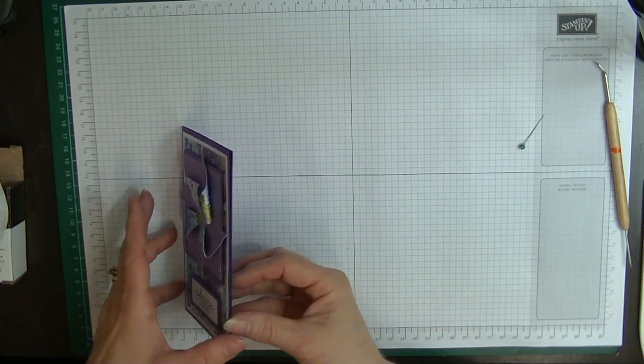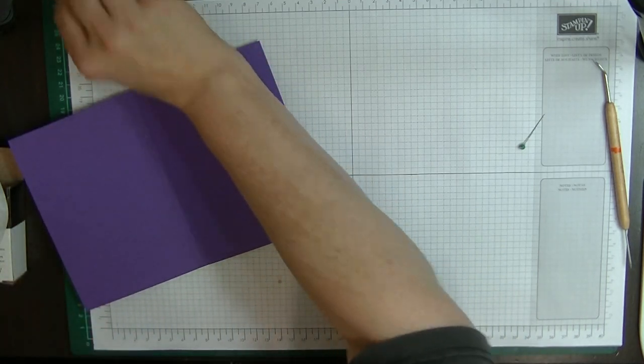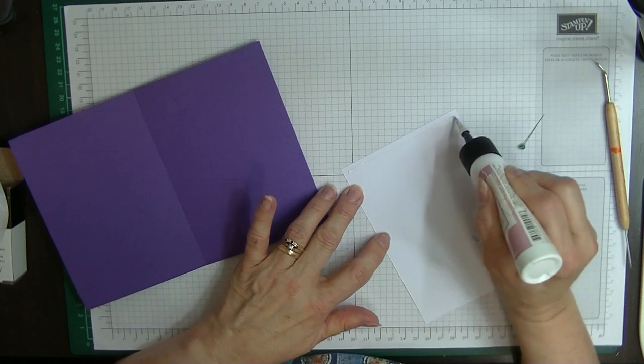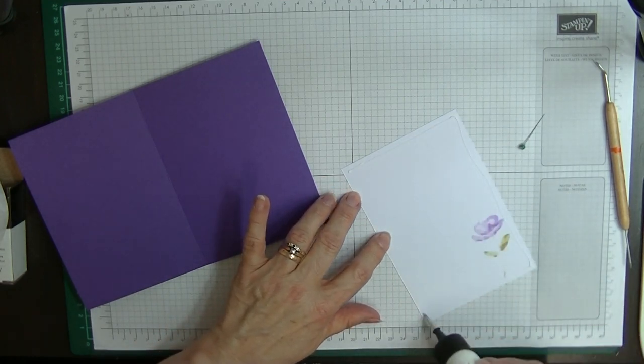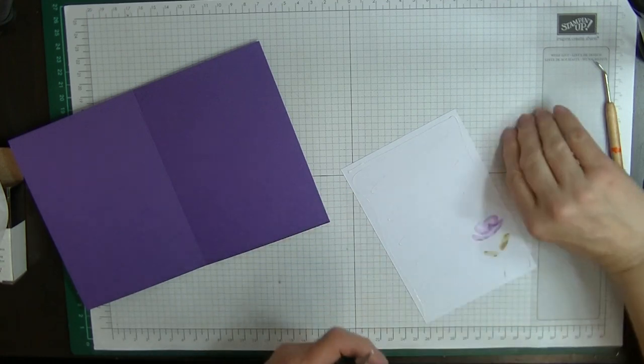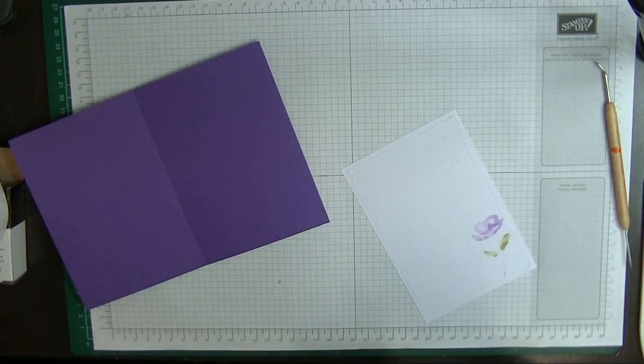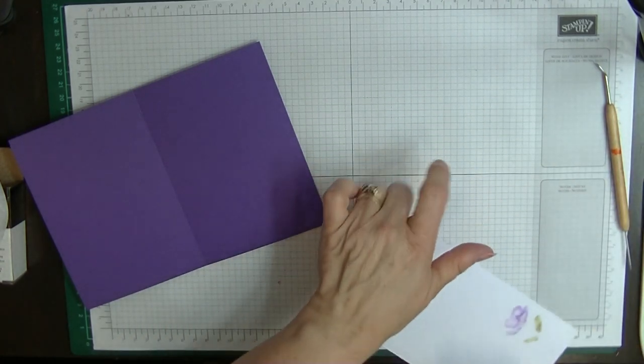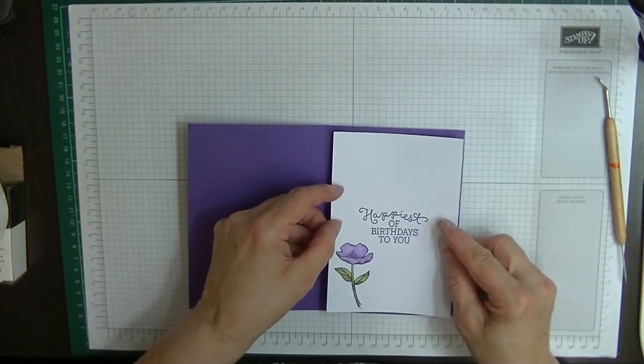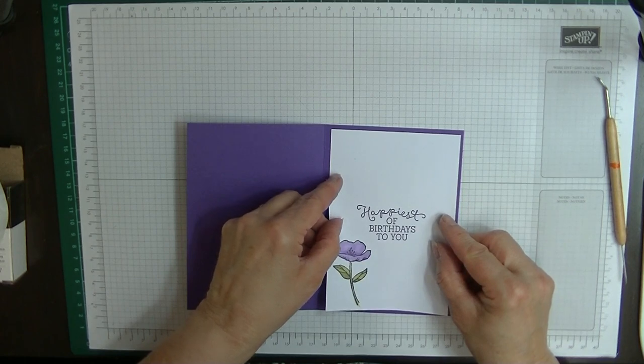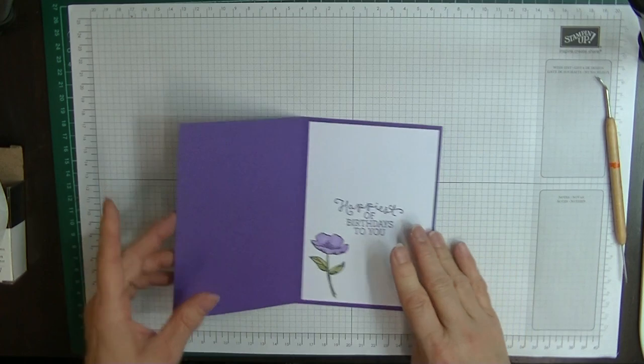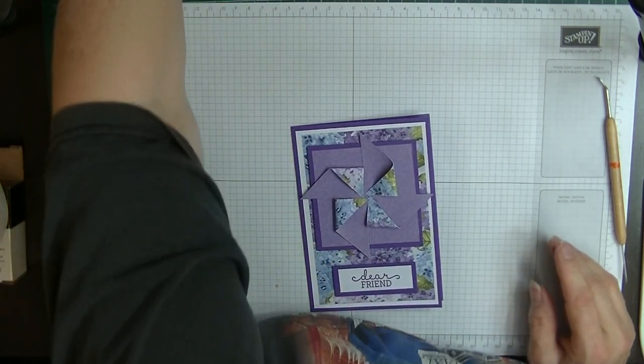Just pop that out of the way for a minute because I'll need that again. A couple of dimensionals onto the back of this, and pop that onto the front of our card. Let's put our insert in. Now I can put a lid on my glue. And there's the inside of our card done.